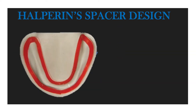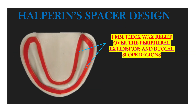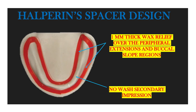Looking at the figure, you can see 1 mm thick wax relief over the peripheral extensions and buccal slope region. There is no spacer placed on the ridge of the mandible, so no wash or secondary impression is required because the tray is in direct contact with the ridge.